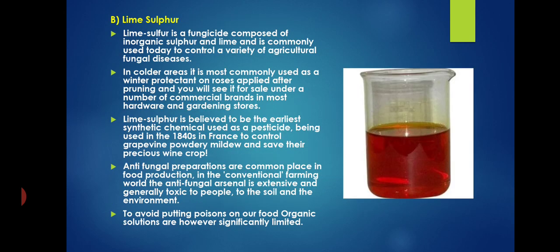The second fungicide is lime sulphur, composed of inorganic sulphur and lime, commonly used to control a variety of agricultural fungal diseases. It can be used in colder climatic conditions. Lime sulphur is believed to be the first synthetic chemical used as a pesticide. Antifungal preparations are commonly used in food production by conventional methods; to avoid putting poisons on food, organic solutions are however significantly limited.